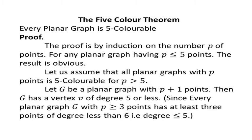We now get into the proof of the five color theorem. The proof of this theorem is by induction on the number of vertices, that is the number p of points. For any planar graph having p less than or equal to 5 points, the result is obvious. So let us assume that all planar graphs with p points are five-colorable for p greater than or equal to 5.